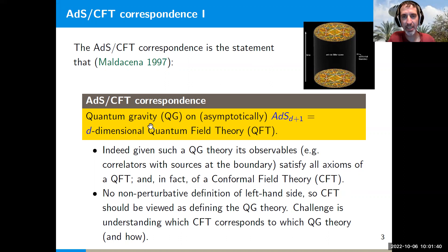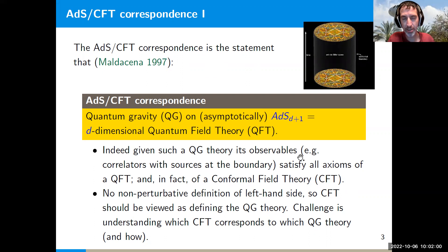The AdS/CFT correspondence is the statement that quantum gravity on asymptotically anti-de Sitter spacetimes is equivalent to a d-dimensional quantum field theory. In some sense it's a tautology: if somebody gives us a gravity theory on an asymptotically AdS space in four dimensions or higher, it more or less automatically satisfies all the axioms of a quantum field theory — in fact of a conformal theory.